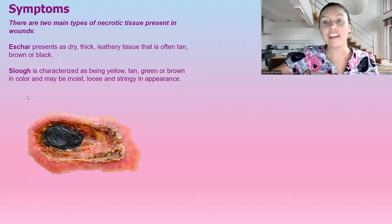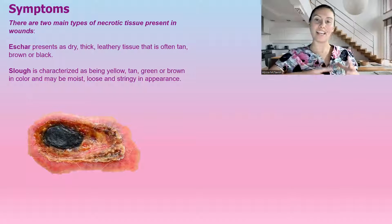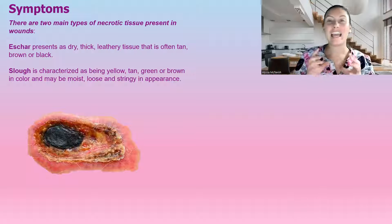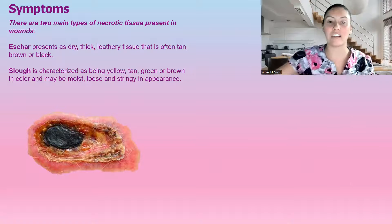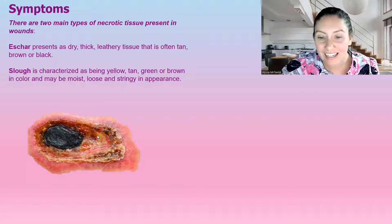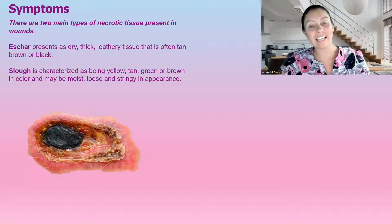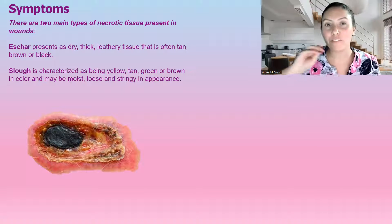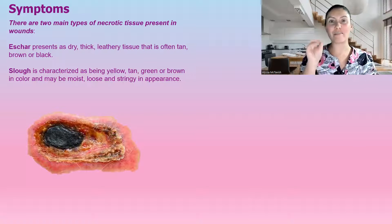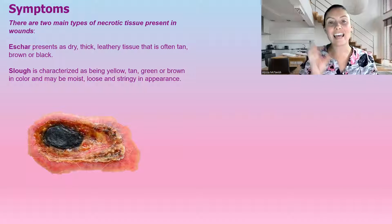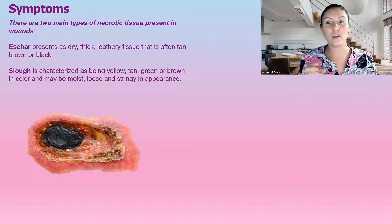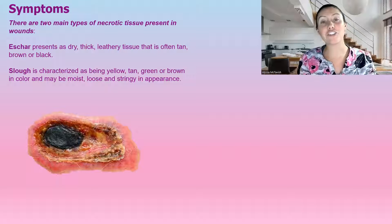Now our slough — it's normally yellow, tan, green, or brown, and it may be moist. It's loose and stringy in appearance, kind of like in this area here. It looks a little bit moist and wet. That is our slough. They're both necrotic tissue.